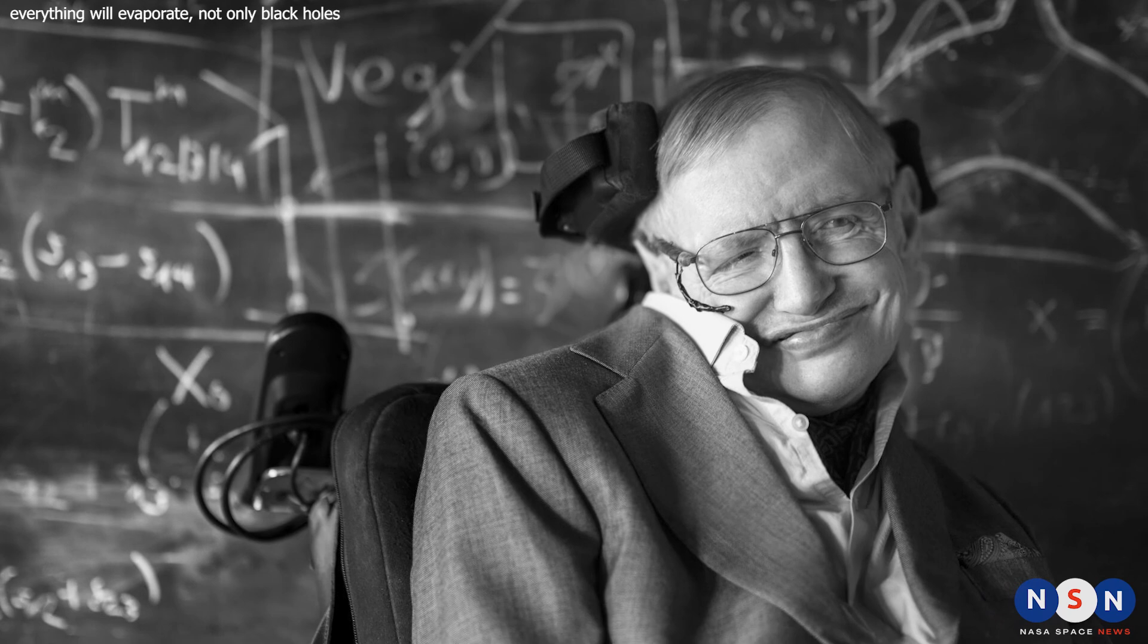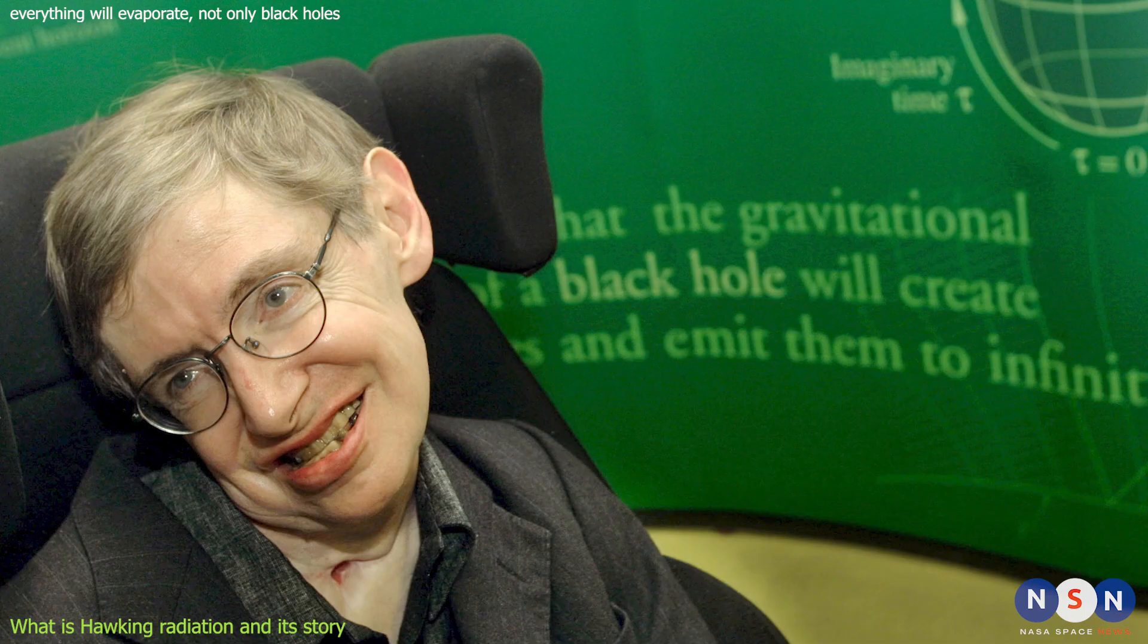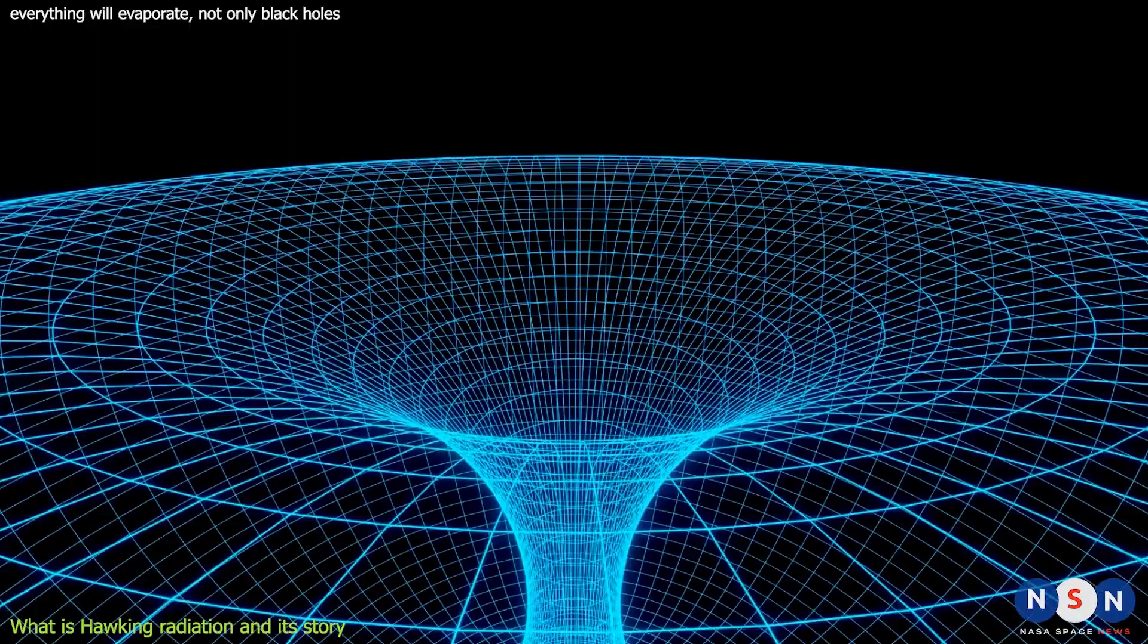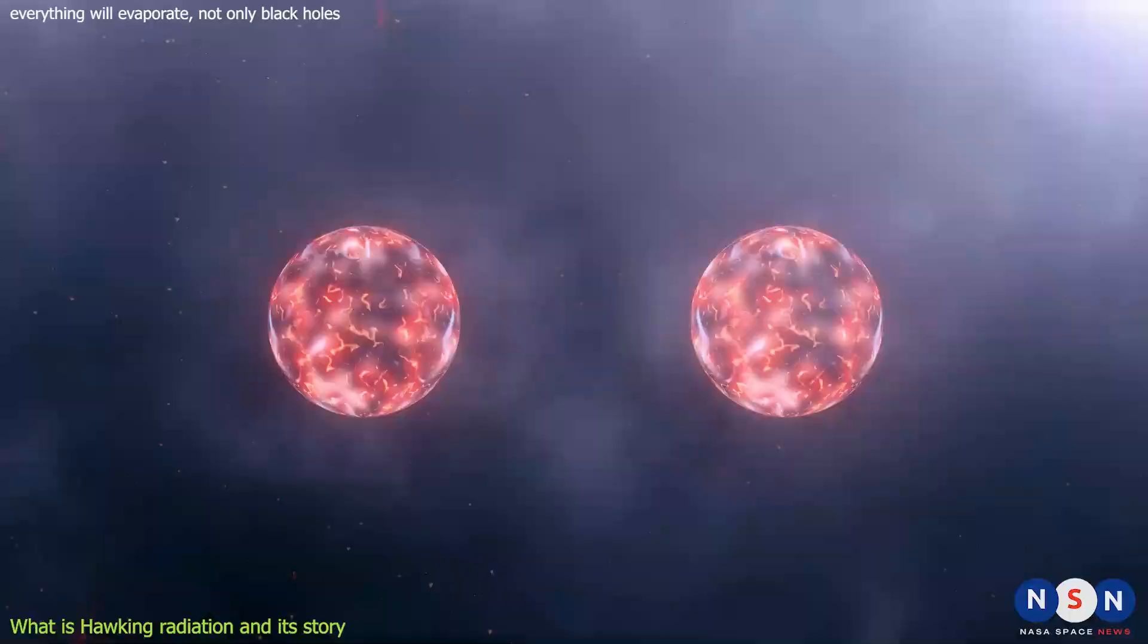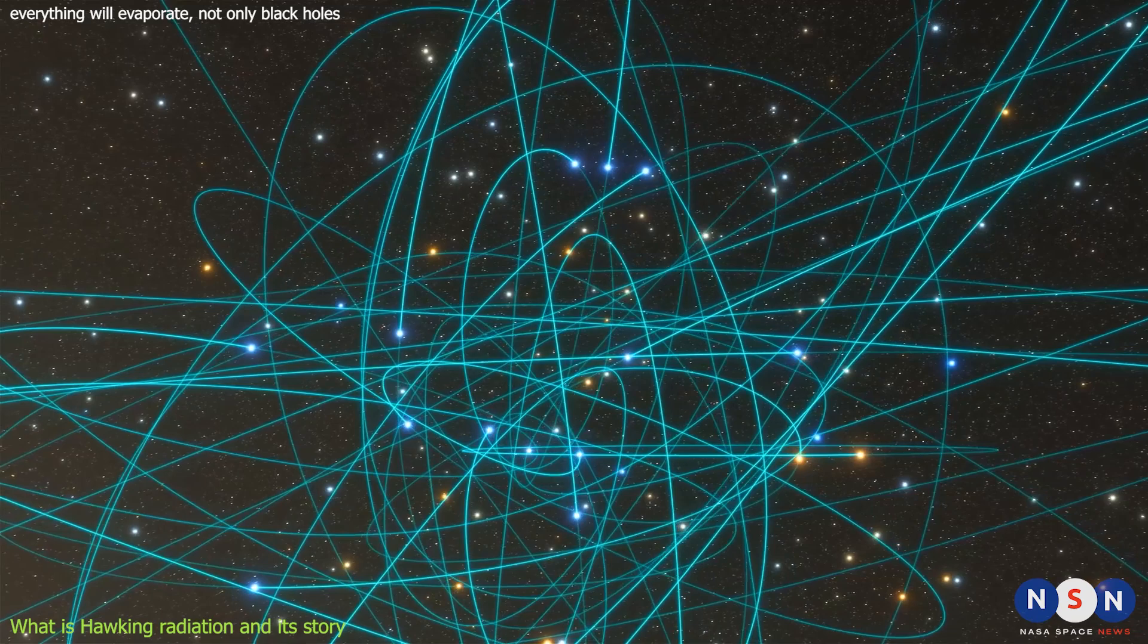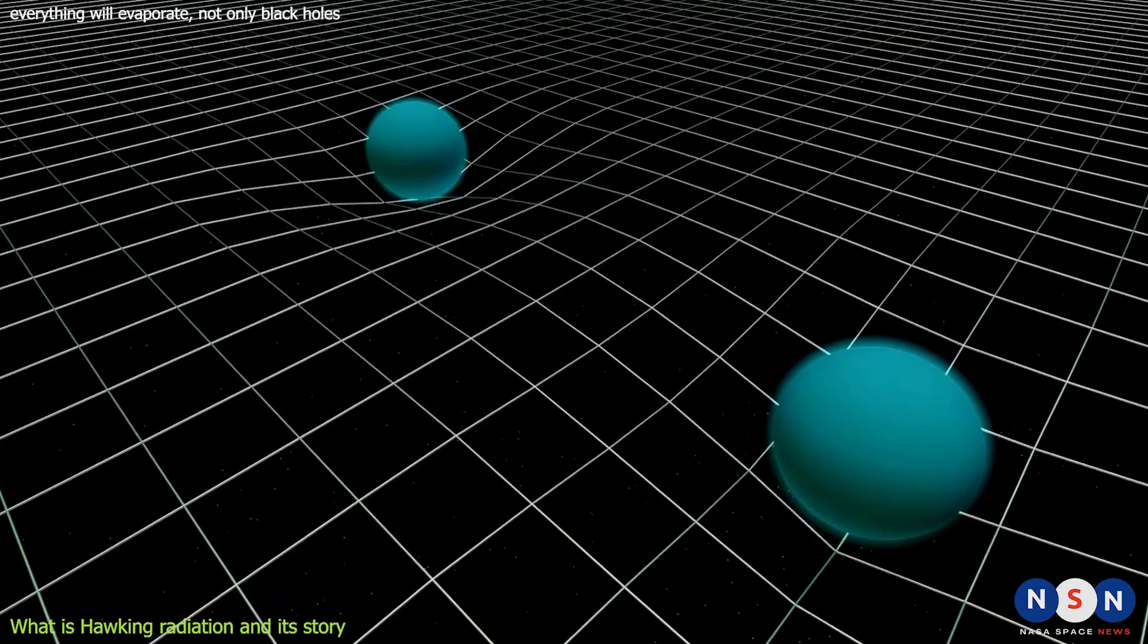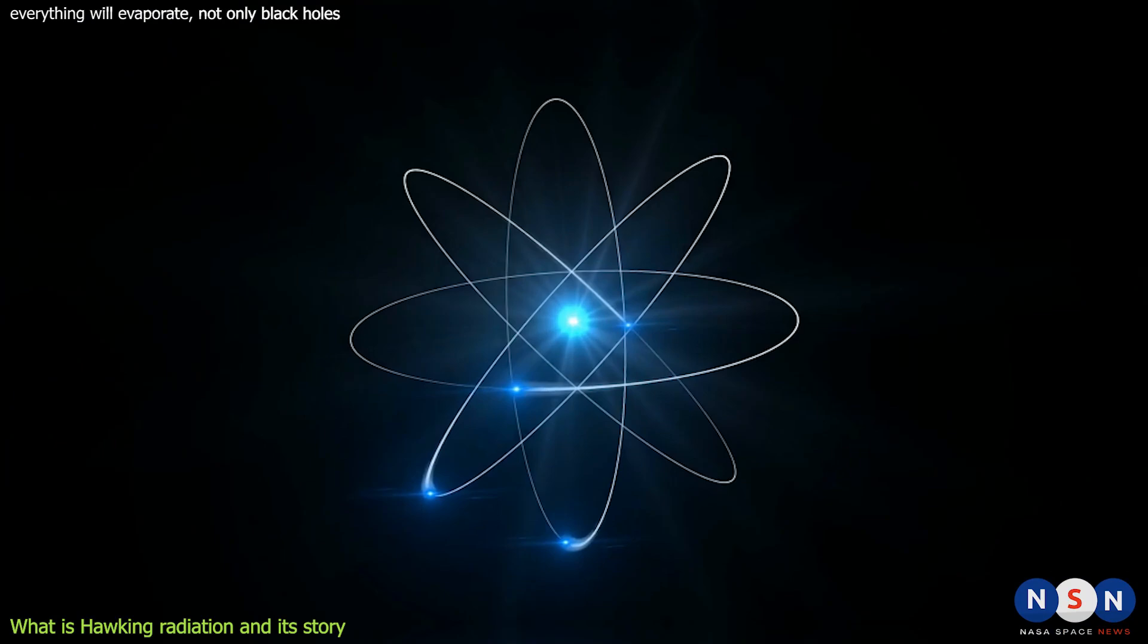Hawking radiation is named after the famous physicist Stephen Hawking, who proposed it in 1974. He was trying to solve a puzzle that arose from combining two of the most successful theories in physics: general relativity and quantum mechanics. General relativity describes how gravity works on large scales, such as in stars and galaxies. Quantum mechanics describes how matter and energy behave on small scales, such as atoms and photons.